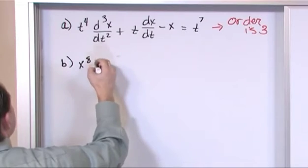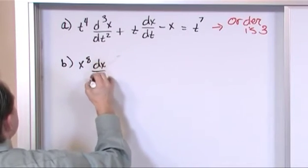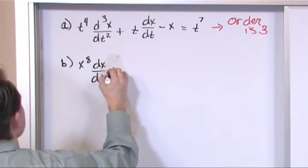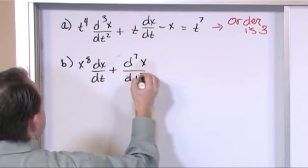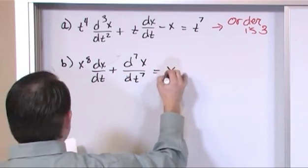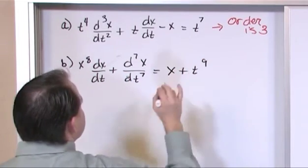times dx/dt plus the seventh derivative of x with respect to time is equal to x plus t to the ninth power.